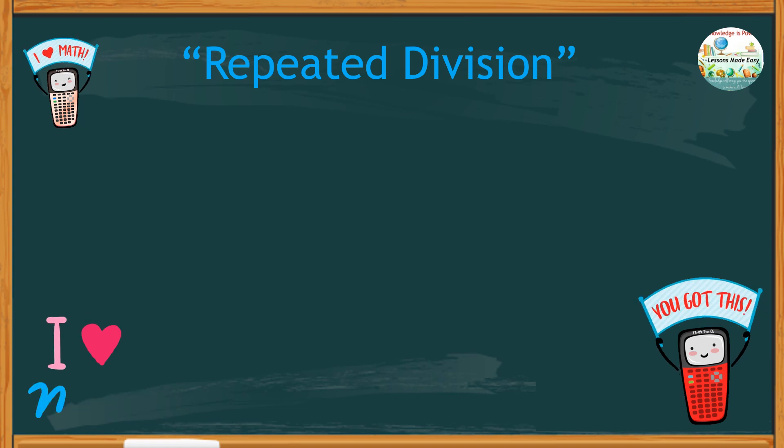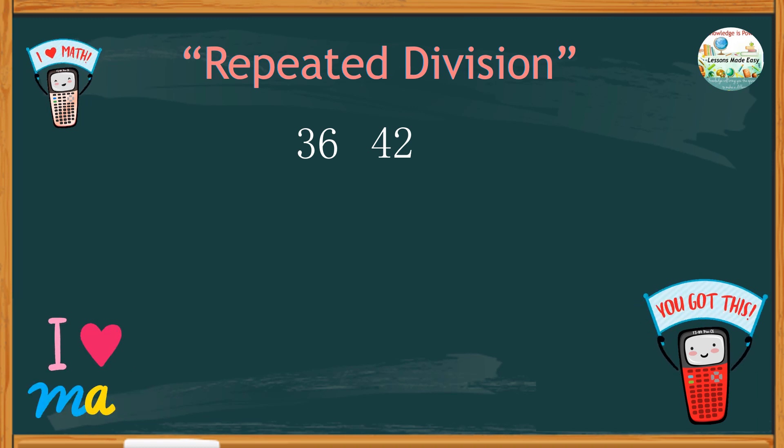Another simple and convenient way to find the highest common factor of 2 or more numbers is by doing repeated division. For example, if you are to find the highest common factor of 36 and 42, all you have to do is put the numbers next to each other. And then, divide these numbers one at a time using the short division method, like this one. It is always easier to start with a small number as a divisor so that you won't struggle that much.